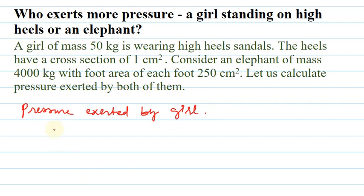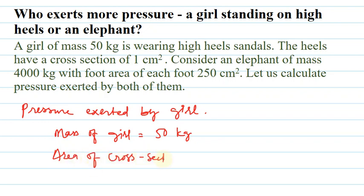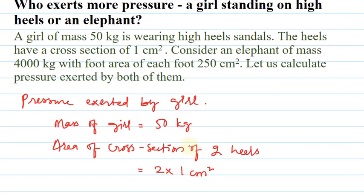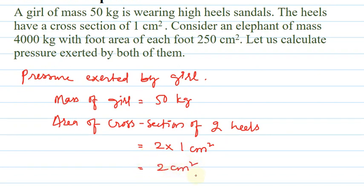Pressure exerted by girl — let us take the given data. Mass of girl is 50 kilograms. Area of cross-section of two heels is 2 into 1 centimeter square, that is 2 centimeter square. The unit of area is in the CGS system while the unit of mass is in the SI system. The fundamental rule in solving physics numericals is to convert all values with their units into the same system.